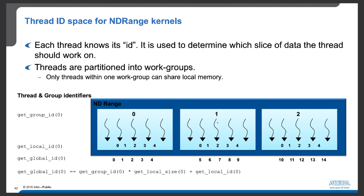Each kernel function or thread knows its identifier, which is used to determine which slices of data it should work on. Through this mechanism, threads can access different pieces of data in the original dataset. These threads are also partitioned into workgroups. Only threads within one workgroup can share local memory. For example, with 15 threads grouped in sets of five, the first five threads form workgroup 0 and can share local memory. Likewise, the next five threads share local memory, and the final five share local memory.